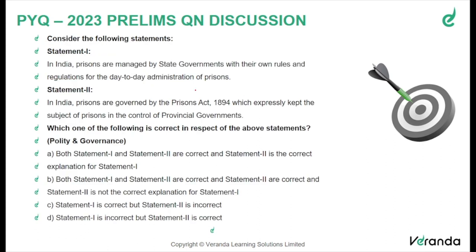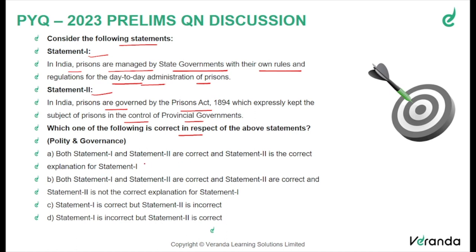Moving on to the next question. Consider the following statements. First: In India, prisons are managed by state governments with their own rules and regulations for day-to-day administration. Second: In India, prisons are governed by the Prisons Act 1894, which expressly kept the subject of prisons in the control of provincial governments. Options: A — both statements correct and statement 2 is the correct explanation; B — both correct but statement 2 is not the correct explanation; C — statement 1 correct, statement 2 incorrect; D — statement 1 incorrect, statement 2 correct.